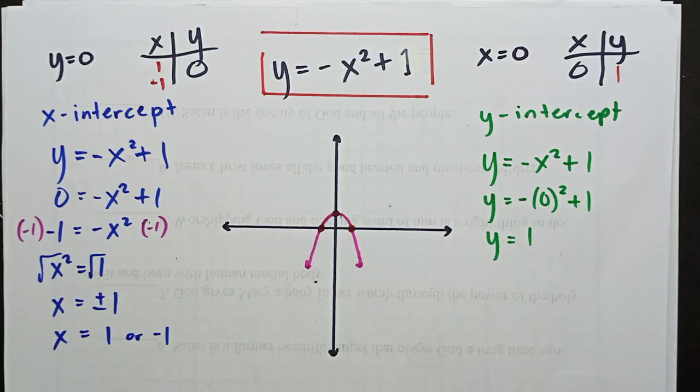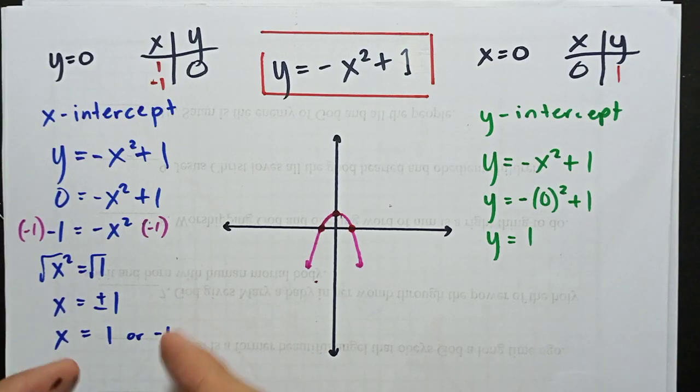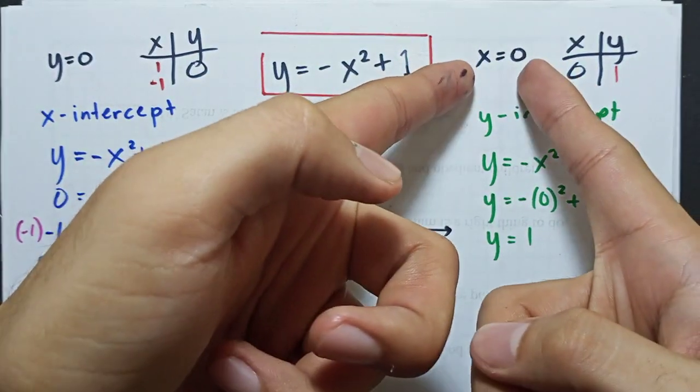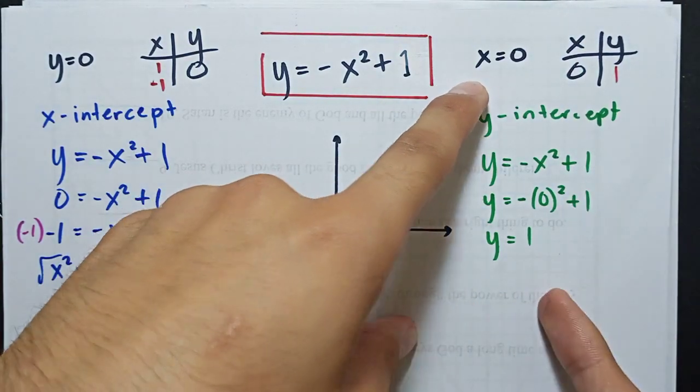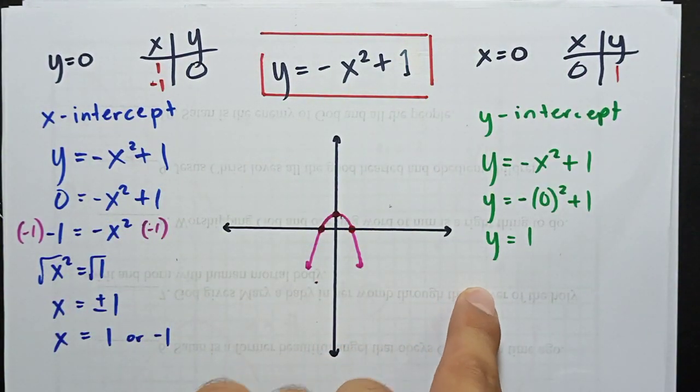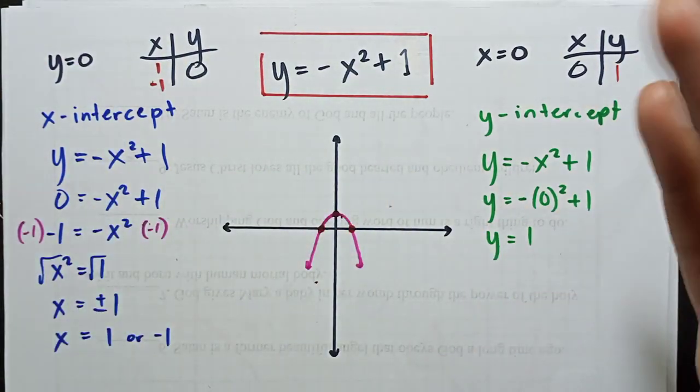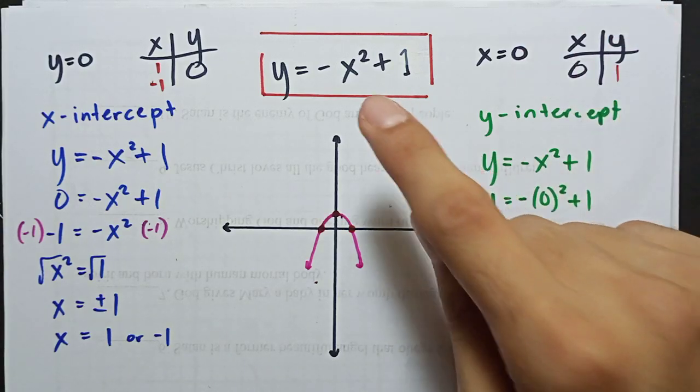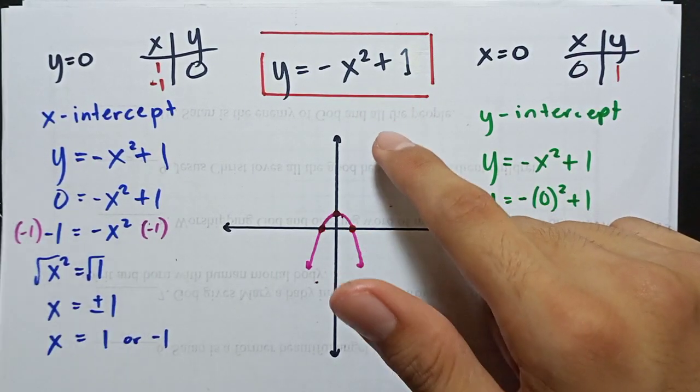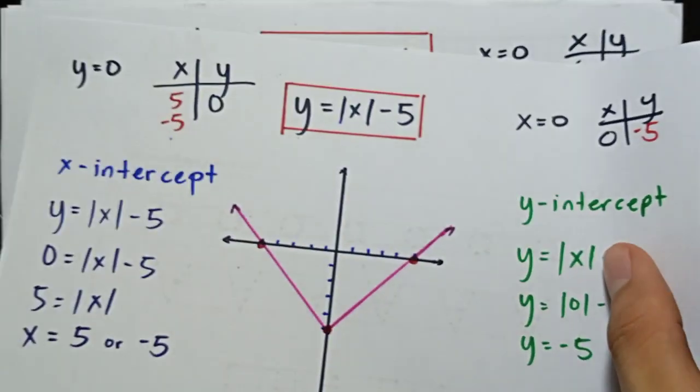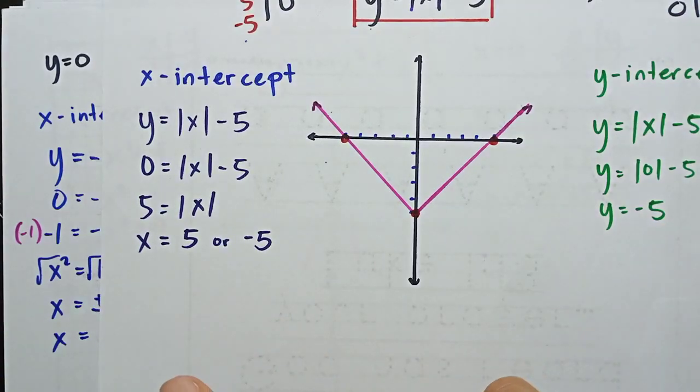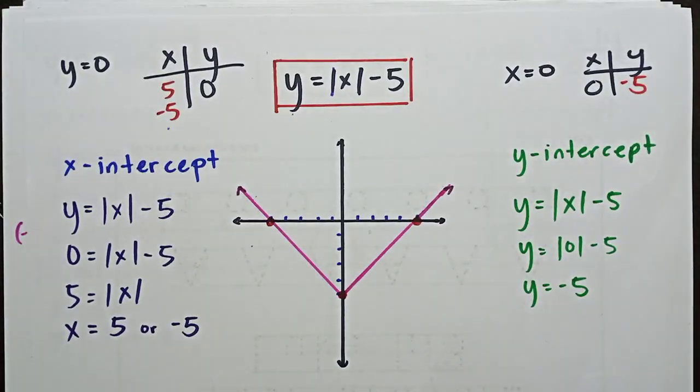So that's it. For x-intercept, just equate y to 0, then solve for the value of x. Then for y-intercept, equate x to 0, then solve for the value of y if x is equal to 0. That's it. Then when you've plotted them, just graph it. Same concept. What's new here is we have x squared which is quadratic, and the previous one with absolute value of x. That's why we got two values for x, 5 and negative 5. Anyway, that's all. Thank you for watching. And please subscribe. Thank you. Goodbye.